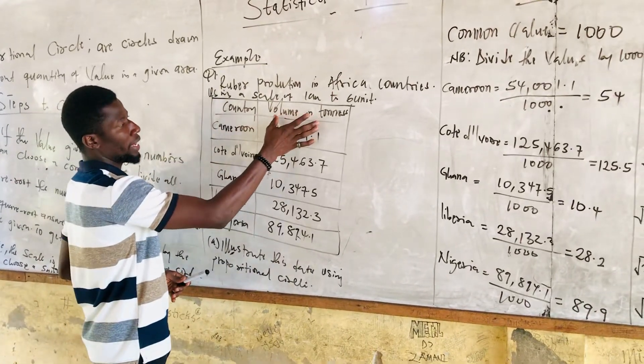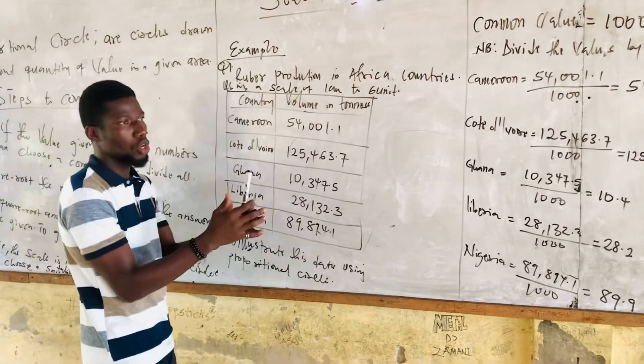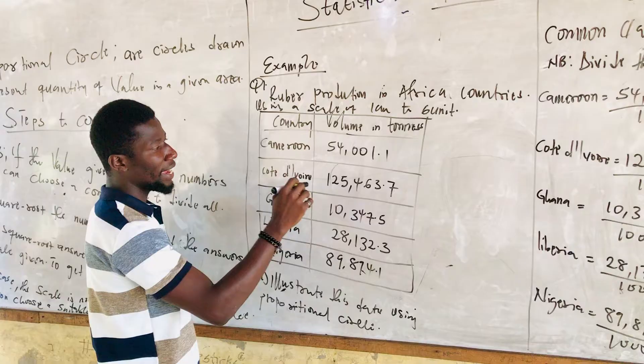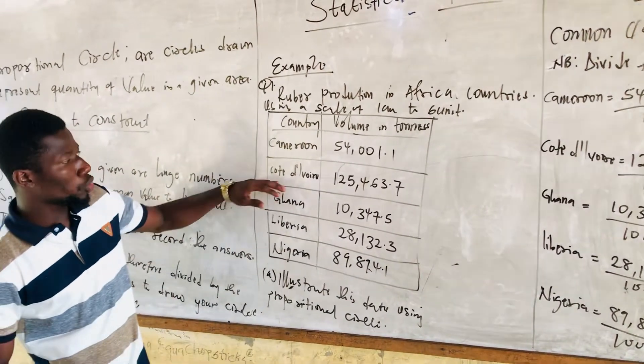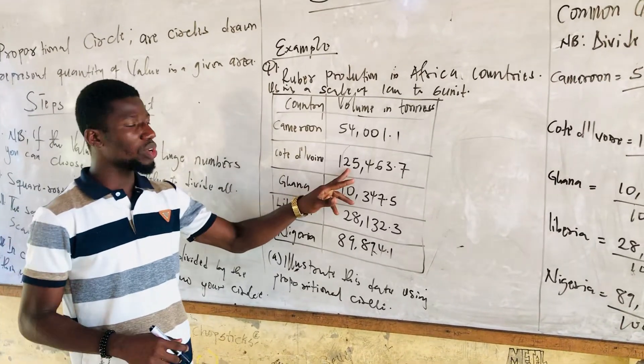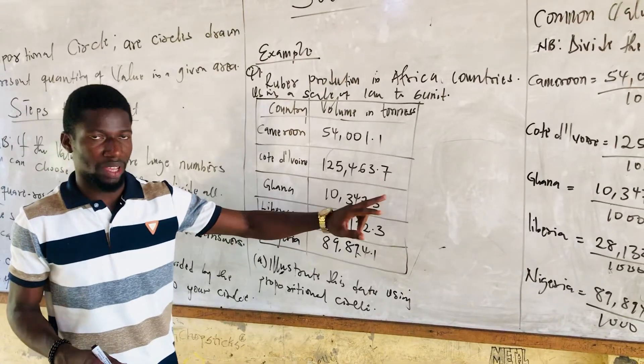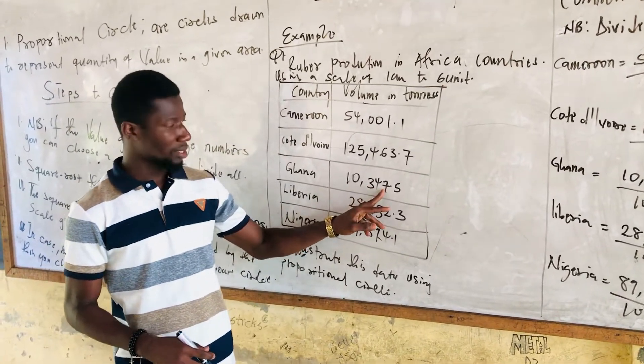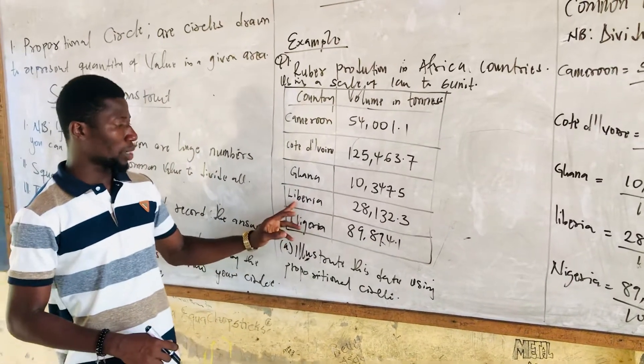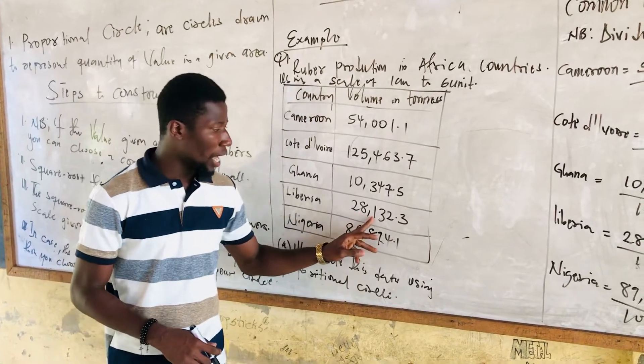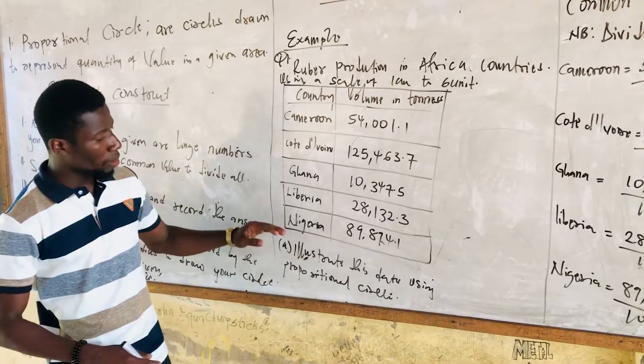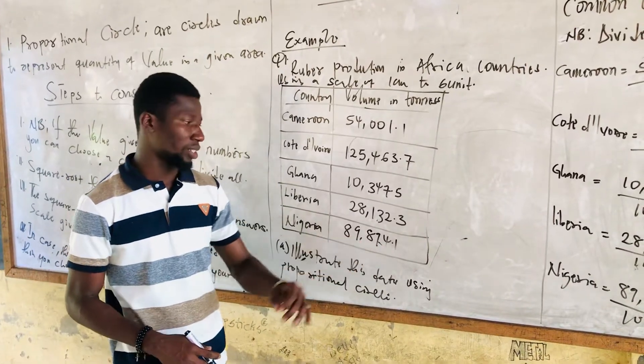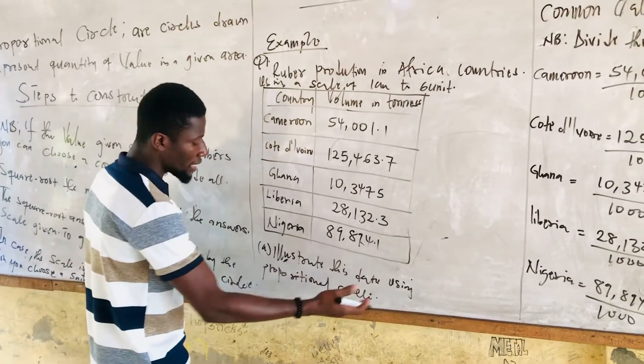Let's go to the question or the table. We have country, we have volume of tons. That is the quantity of rubber production each country has. We have Cameroon: 54,001.1. Then we go to Côte d'Ivoire, their production of rubber is 125,463.7 tons. We have Ghana, our country, producing 10,347.5. We have Liberia producing 28,132.3 tons. We have Nigeria producing 89,894.1 tons.